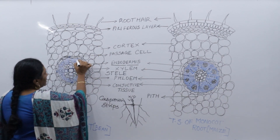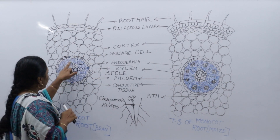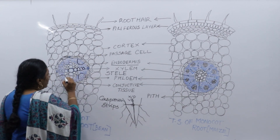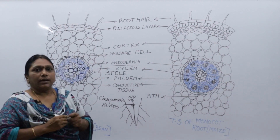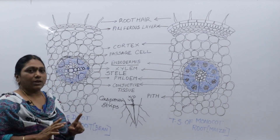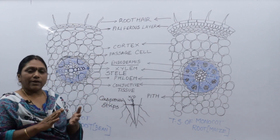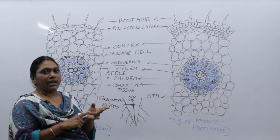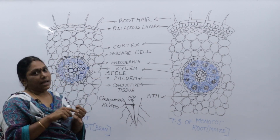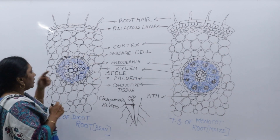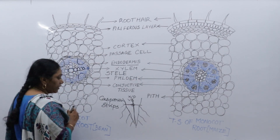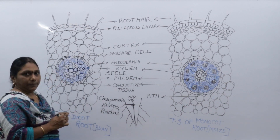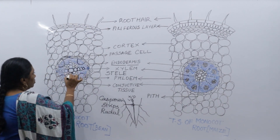The large cells are called as xylem and the smaller cells form phloem. To describe the vascular bundles in the root: xylem and phloem are arranged at different radii. Therefore we say the vascular bundles are radial in arrangement.